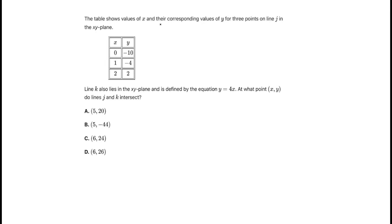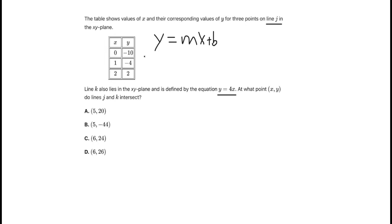The table shows values of x and their corresponding values of y for three points on line j in the xy plane. Line k also lies in the xy plane and is defined by the equation y equals 4x. At what point (x, y) do lines j and k intersect? The first thing we're going to need to do is find the equation for line j, which is going to have the form y equals mx plus b, where m is the slope and b is the y-intercept. We'll use the table to find m and b.